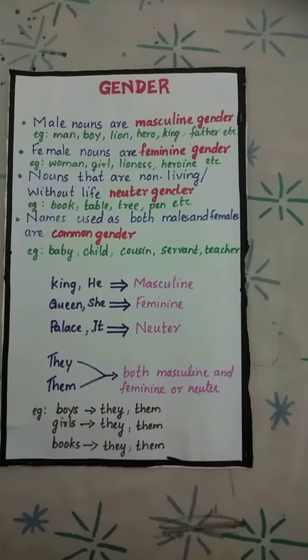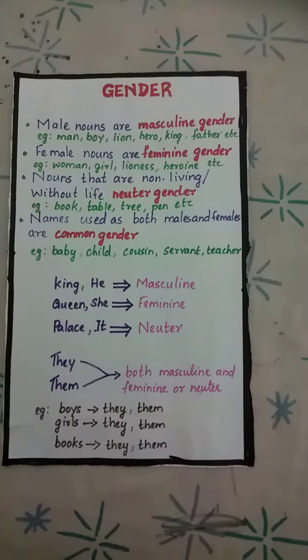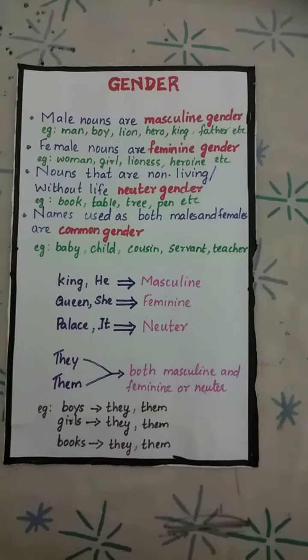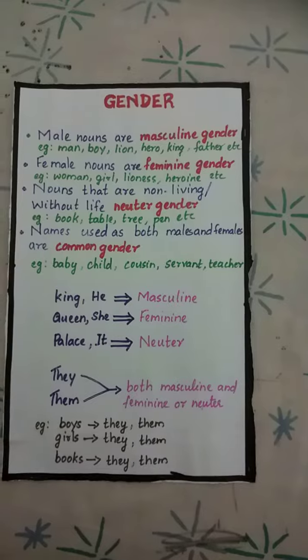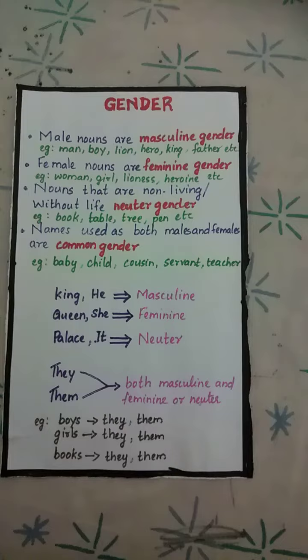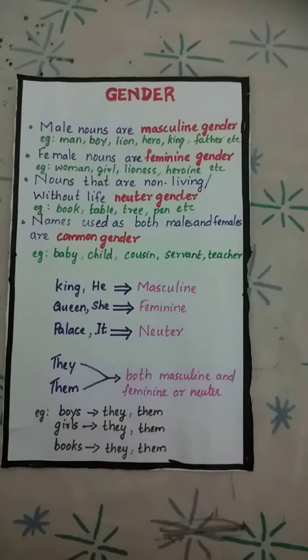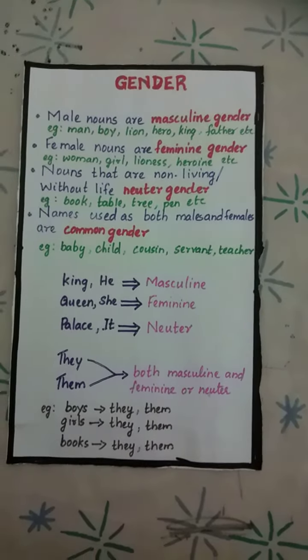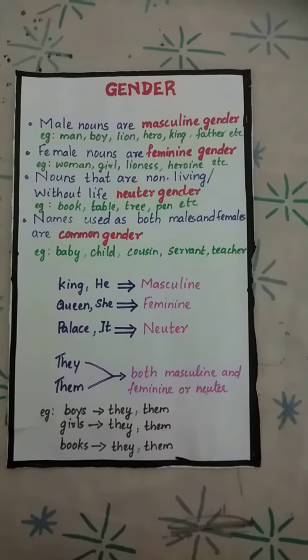Names used as both male and female are common gender. For example, we can call a boy and a girl both 'baby.' Child, cousin, servant, teacher, doctor, student — these are all common gender.